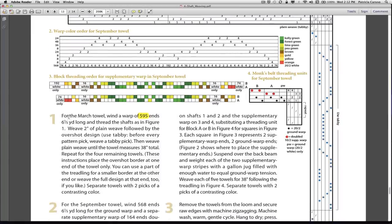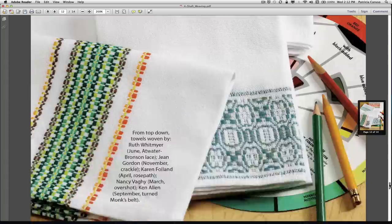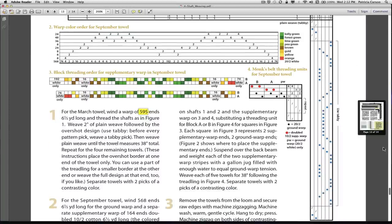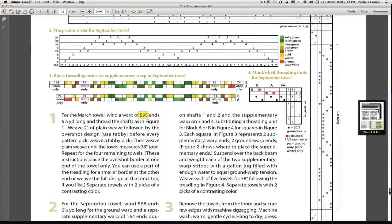Now, again, it said for the March towel, we will wind a warp of 595 ends, and that's if you have 20 inch weaving width. I don't. I only have an 18, I'm going to say an 18 inch weaving width. So, what shall I do? I need to cut off 2 inches.